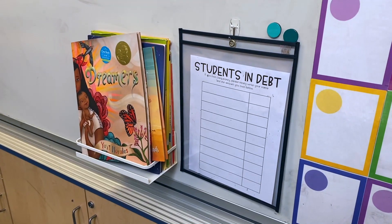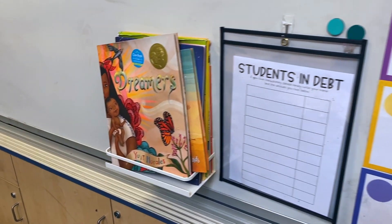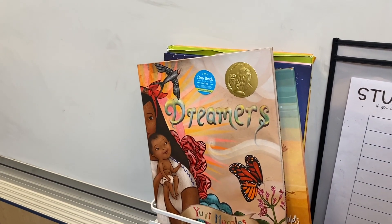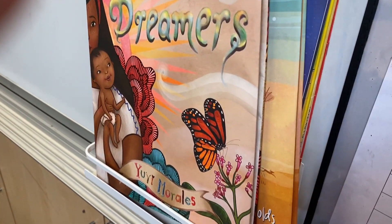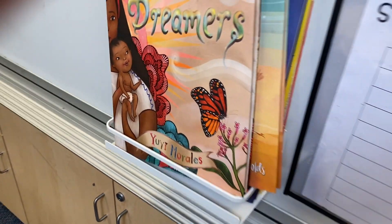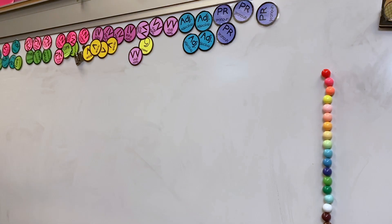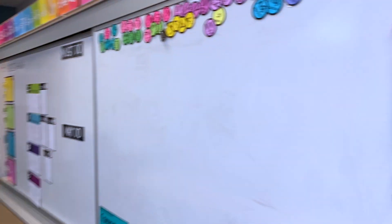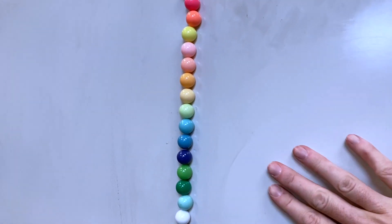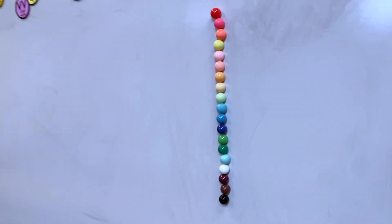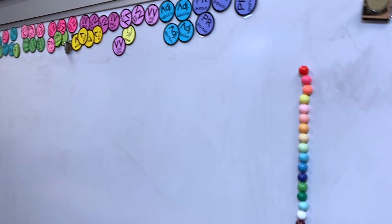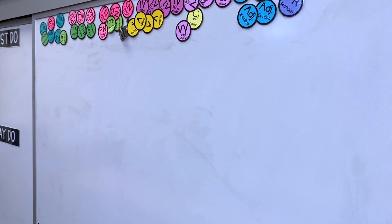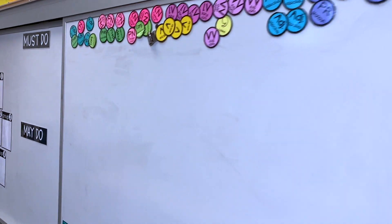If students owe classroom money, they'll write their name up here in expo marker — it just makes it easier to keep track of. This is where we put our read-aloud books. After I've read them, we leave them here so students can read them for a little bit. This is a magnetic shelf for spices from Amazon — Ashley recommended it. When my students use their class passes, they put them up here with a magnet. These are from my friend Jill at Hello Fifth — for her language wall. We would use this part of the whiteboard for that.